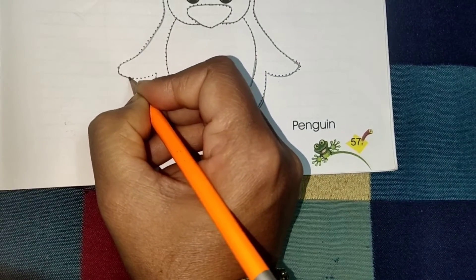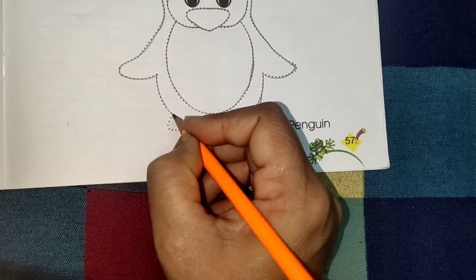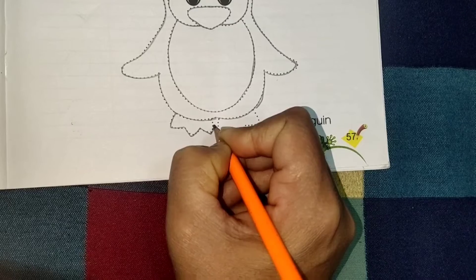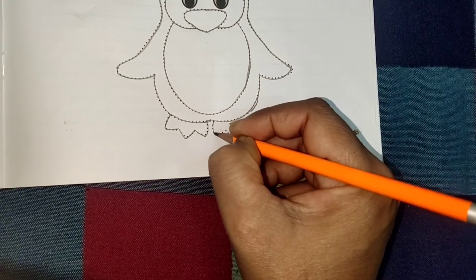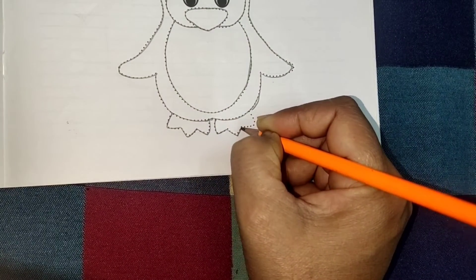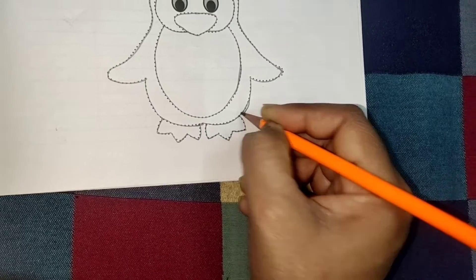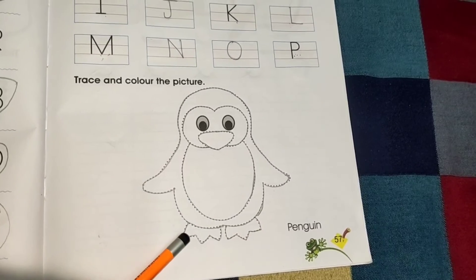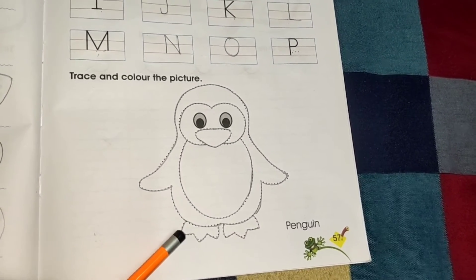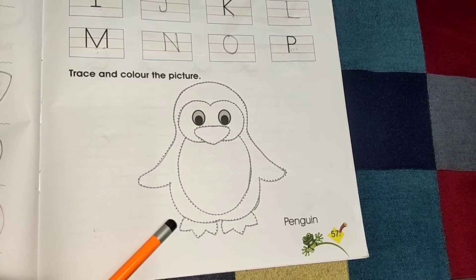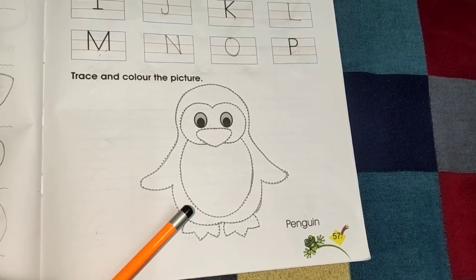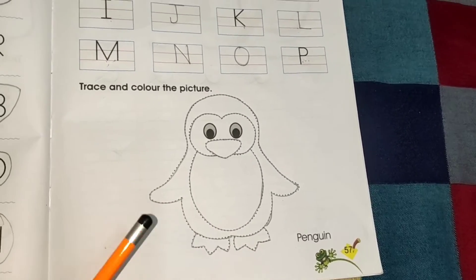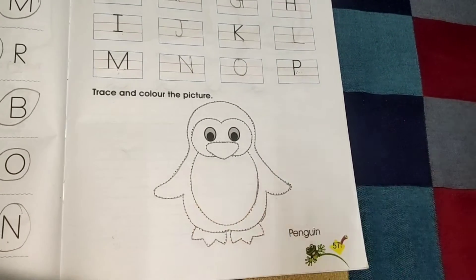So, this is a beautiful activity. Yeh dekho. Aise hume penguin ki tracing karke, usse complete karna hai. And dekho ma'am ne finish kiya. Uske baad, aapko pata hai penguin ka kya color hota hai na. Black and thoda-thoda white hota hai beech mein. So, kahan black hota hai, kahan white hota hai. Aap achhe se coloring karke and ma'am ko homework send karenge. Okay. Bye bye. Bye bye.